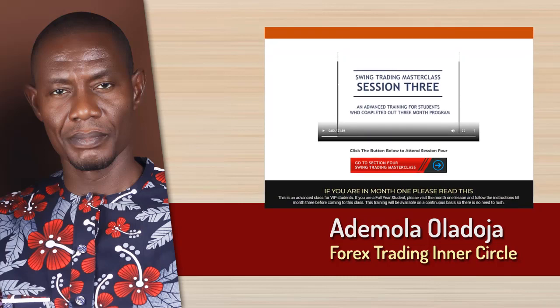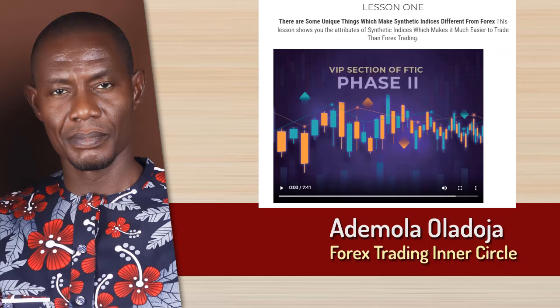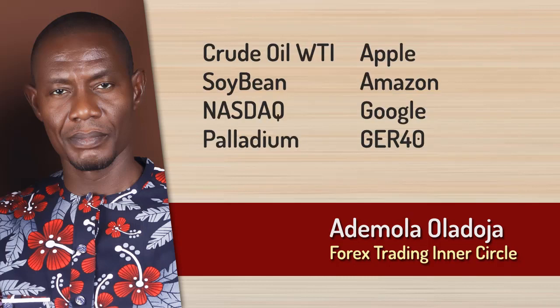In Phase 2, we talked about synthetic indices — jump index, step index, boom and crash, and the behavior of these indices. So in Phase 3, we're going to cover NASDAQ and, if time permits, S&P 500. How do you trade NASDAQ? How do you trade S&P 500 profitably? What are the requirements and things you need to put in place?